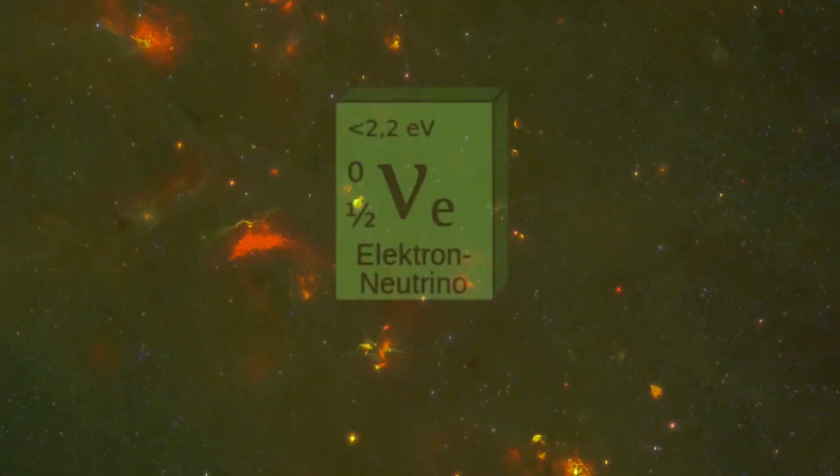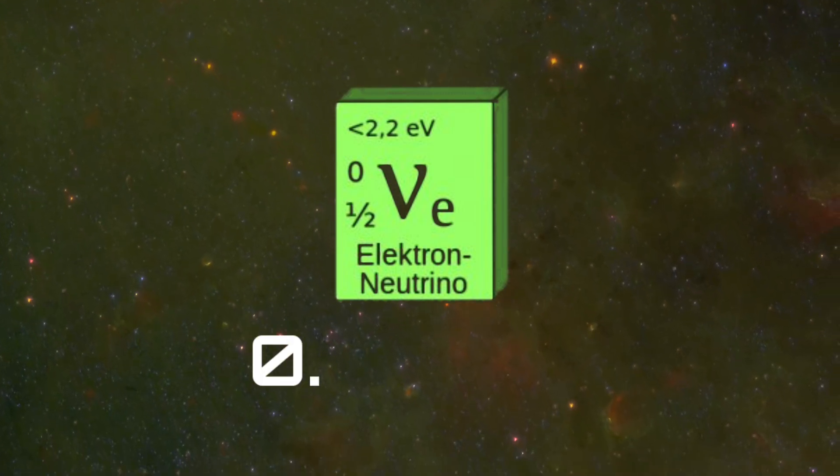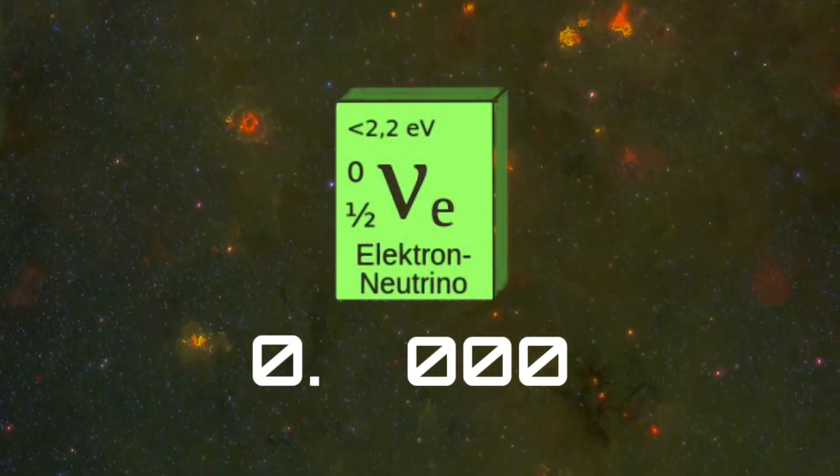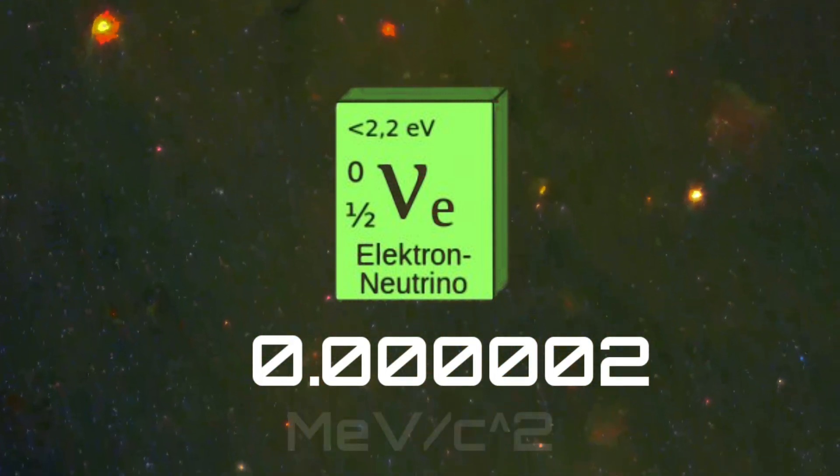And the least massive particle is the electron neutrino particle with a mass of 0.00002 megaelectrovolts.